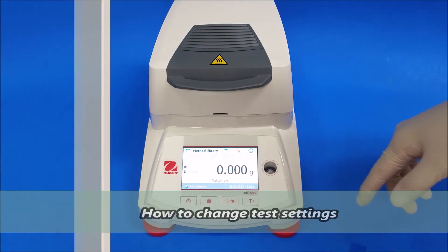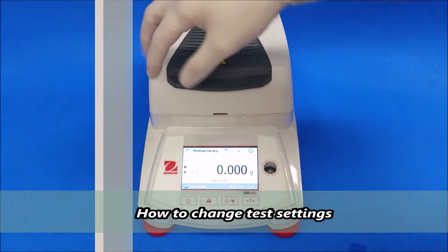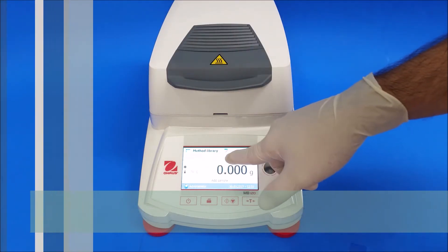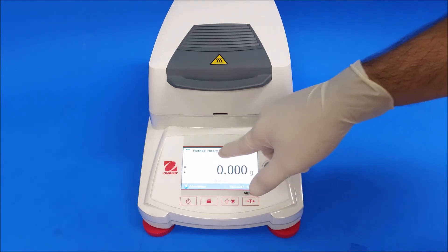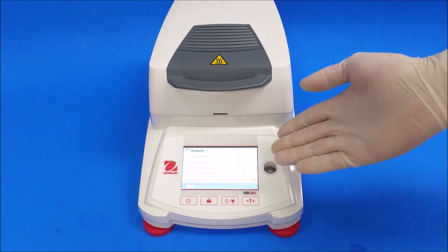And if you guys want to change the test settings, you should go where it says current method, default, drying program, standard. Just click on this whole line here and it should give you the settings.